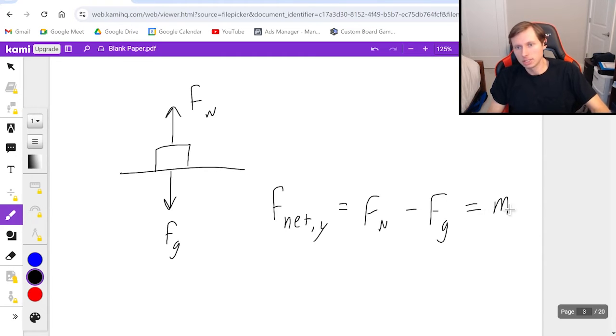And then I set that equal to mass times acceleration, specifically in the Y direction. If this box is not moving up or down, then that means the acceleration is zero, which means FN minus FG equals zero.